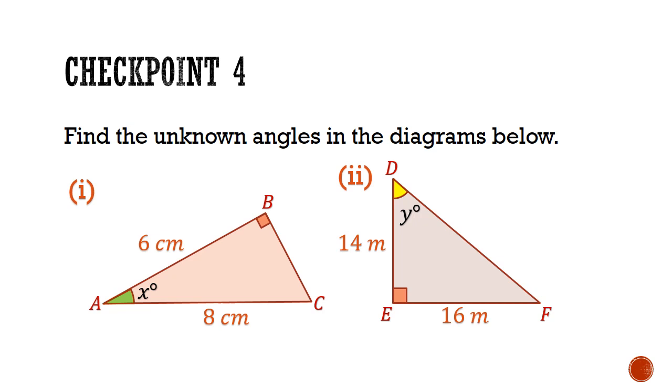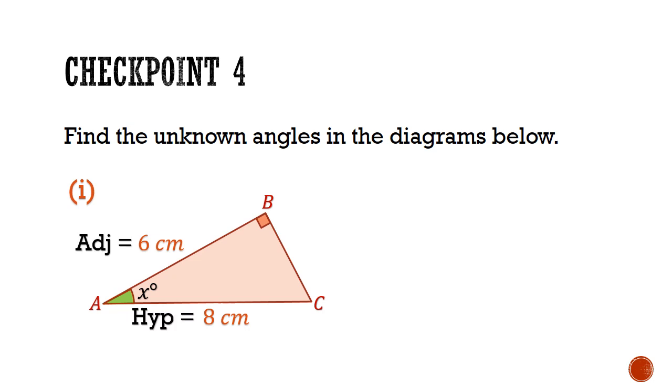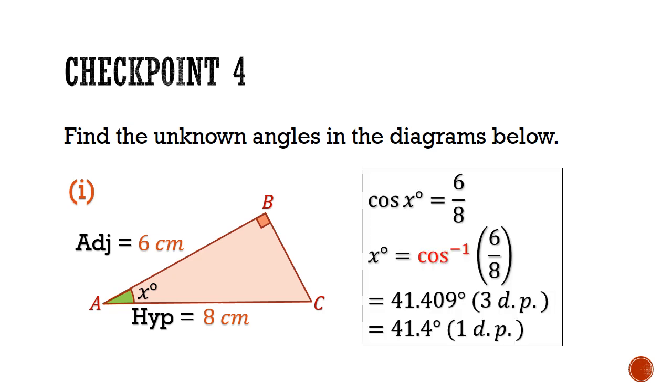Now it's your turn to check your own understanding. Pause the video here, and try to find the unknown angles x and y. Now for the answers. In part 1, we are given the adjacent side and hypotenuse sides for the reference angle x. That leads us to consider the cosine function. Cosine x is equal to 6 over 8. To undo the cosine function, we need to apply the inverse cosine function. This will give us a value of 41.4 degrees for x.